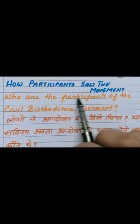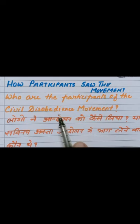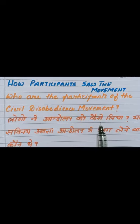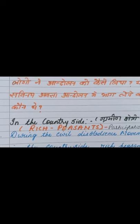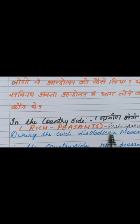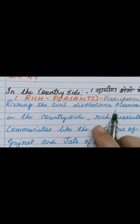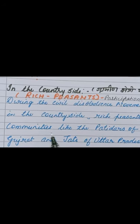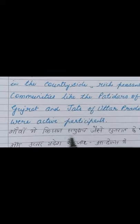So children, how did participants see the movement? We will study about this topic — you can also say, who are the participants of the Civil Disobedience Movement? In this reference, we will first study about the participation of rich peasants in the countryside. During the Civil Disobedience Movement in the countryside, rich peasant communities like the Pattidaars of Gujarat and Jats of Uttar Pradesh were active participants.